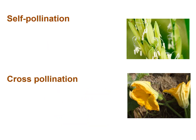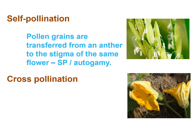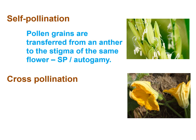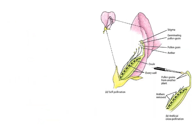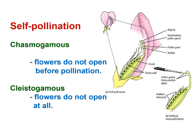Self-pollination, or autogamy, is when pollen grains are transferred from an anther to the stigma of the same flower. Cross-pollination, or allogamy, is when pollen grains are transferred to the stigma of another flower. Chasmogamous flowers open before pollination, while cleistogamous flowers do not open at all.